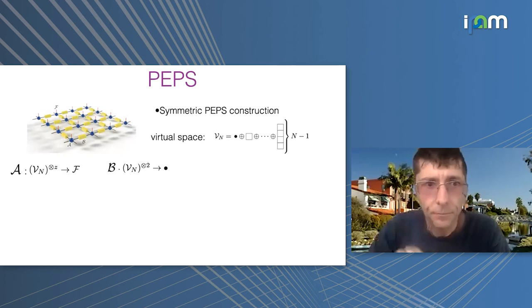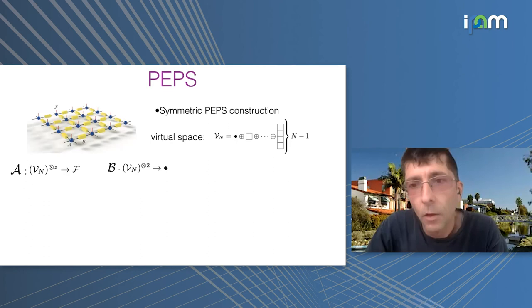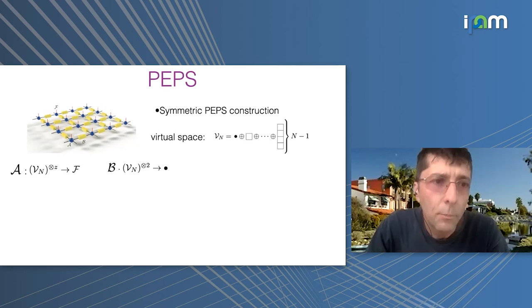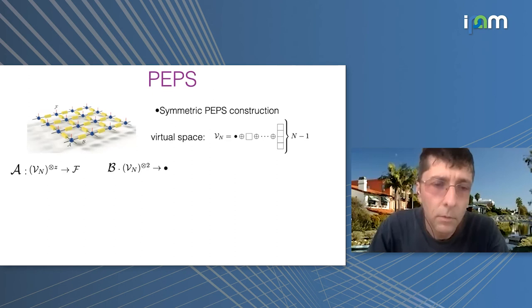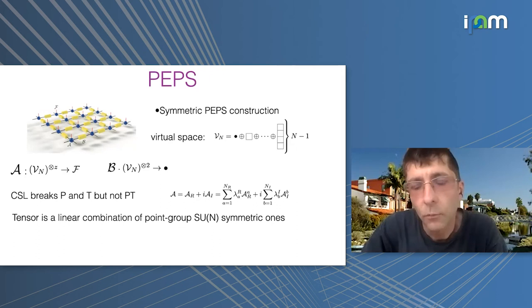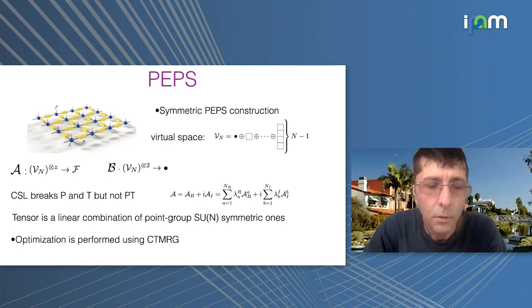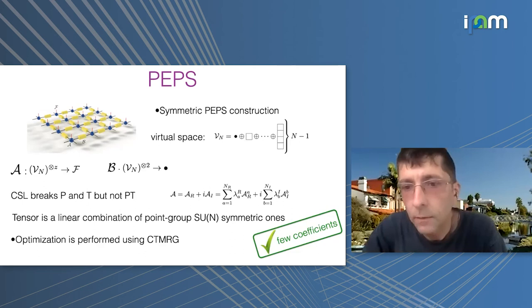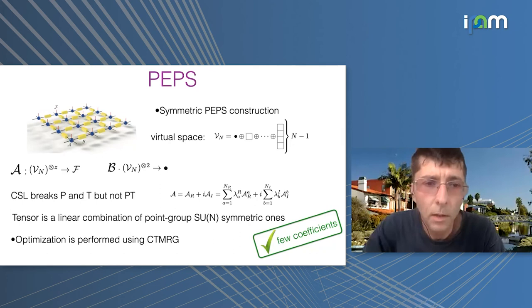Now the PEPS construction. We need to specify the virtual space: it's a direct sum of all possible representations of SU(N) with one column — that's our choice. The on-site tensor A is a linear map from the four virtual spaces to the physical one, and we have a B tensor on the bond to ensure we get a singlet for this PEPS wave function. Since we want to describe a chiral spin liquid that breaks P and T but not their combination PT, we use a linear superposition of tensors after classification. For SU(3) it's about 10 coefficients, for SU(4) around 30 — really reduced due to symmetry classification.